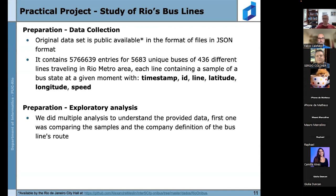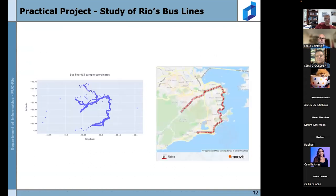With this information, we conducted an exploratory analysis, performing multiple analyses to understand the provided data. The first was comparing the samples to the company's official bus line route definition. On the left we plotted our data samples, and on the right is the Moovit app showing expected bus line routes around Rio de Janeiro. They mostly match through the central part of the route, but the data samples show anomalies in the north part of Rio. The bus line chosen was line 450, selected arbitrarily.